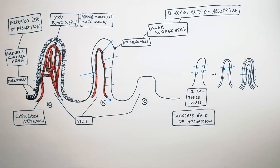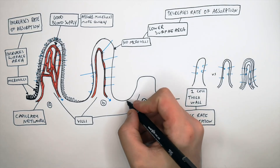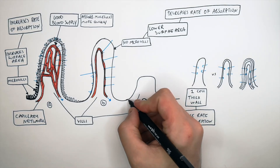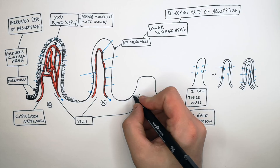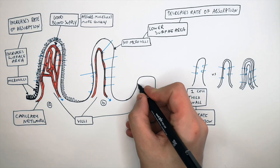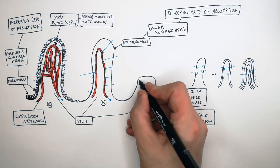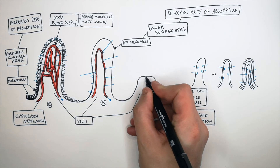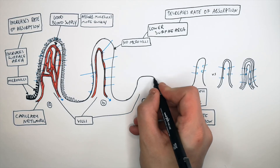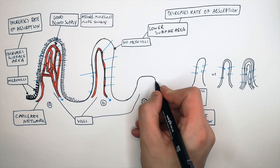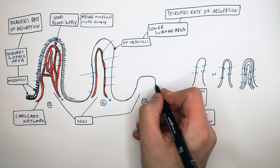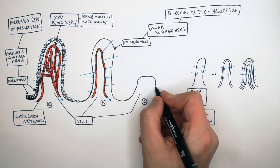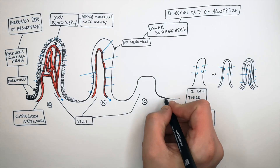Villi C is the villi of someone who has celiac disease. The villi of someone with celiac disease is going to be shorter and have fewer micro villi on their surface. This leads to a decrease in the rate of absorption of molecules, which can lead to a gluten intolerance.